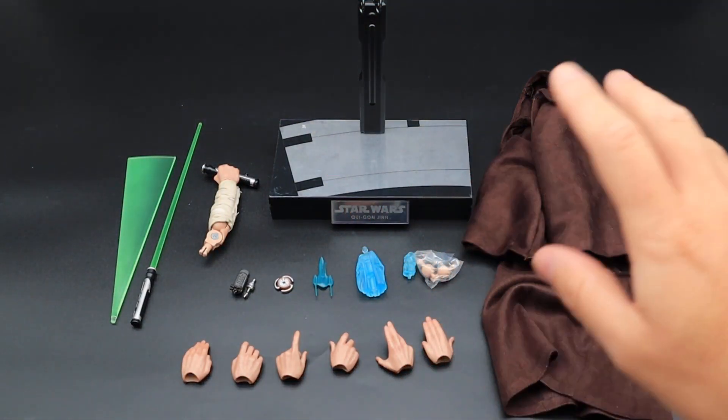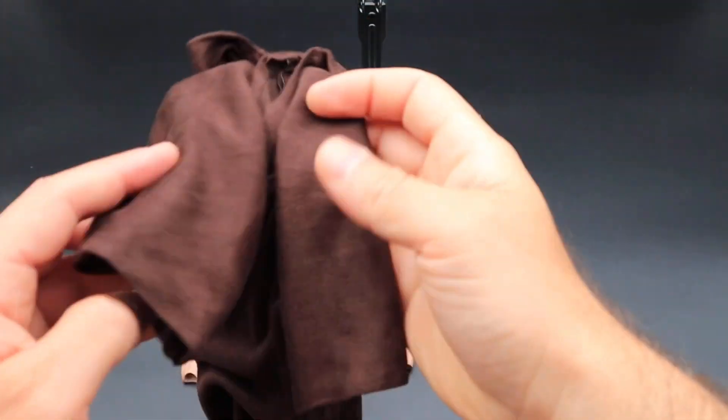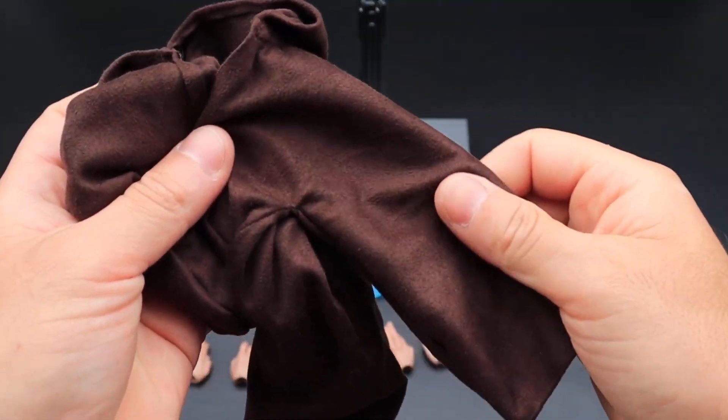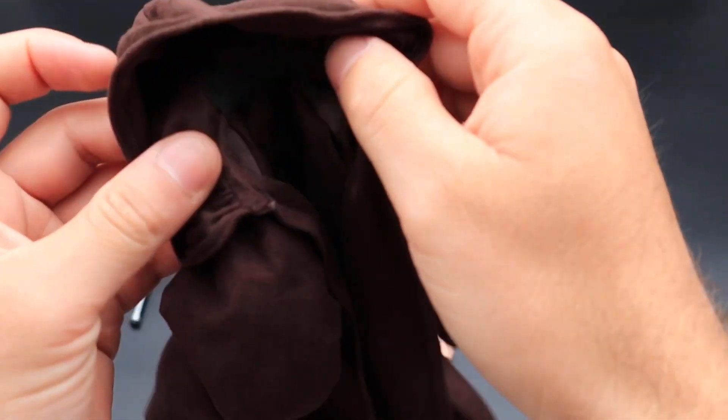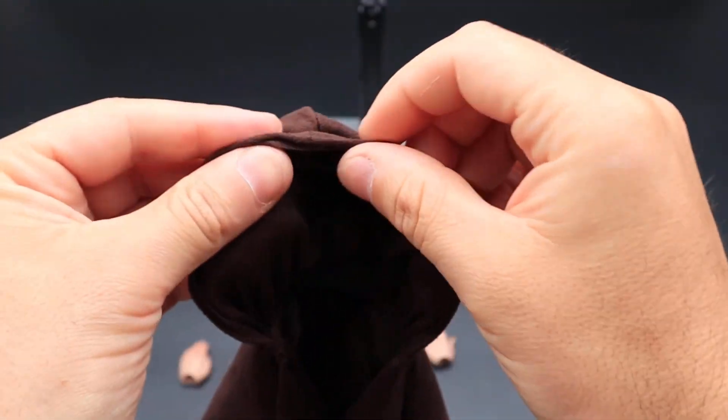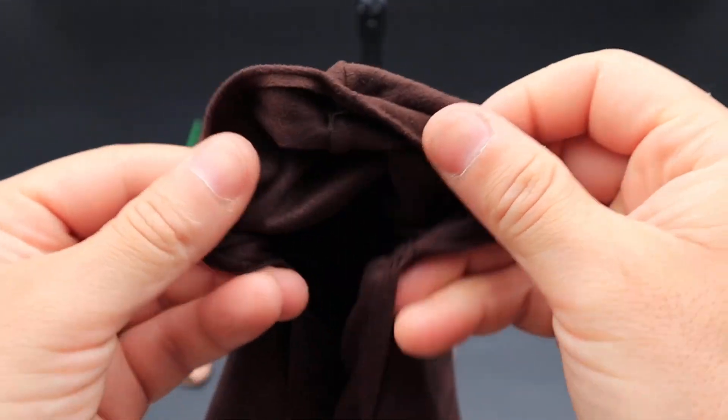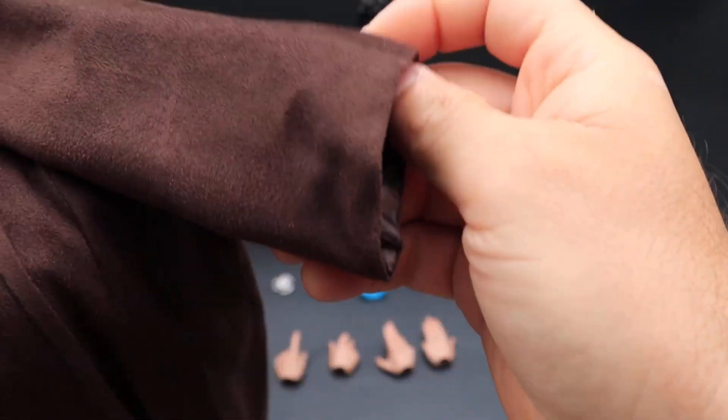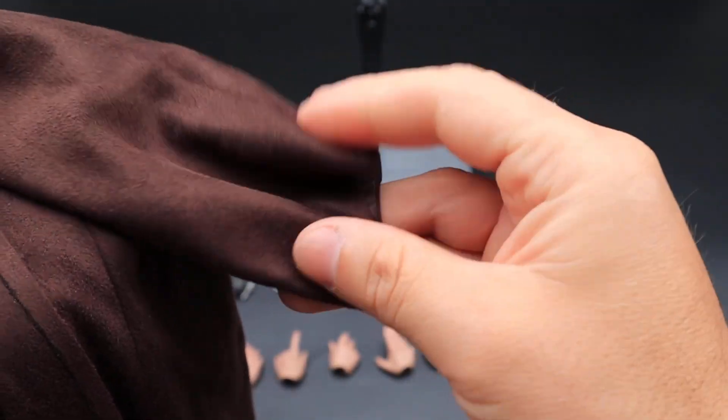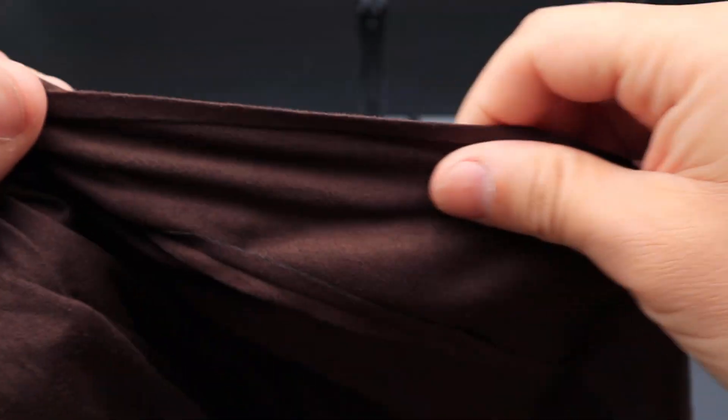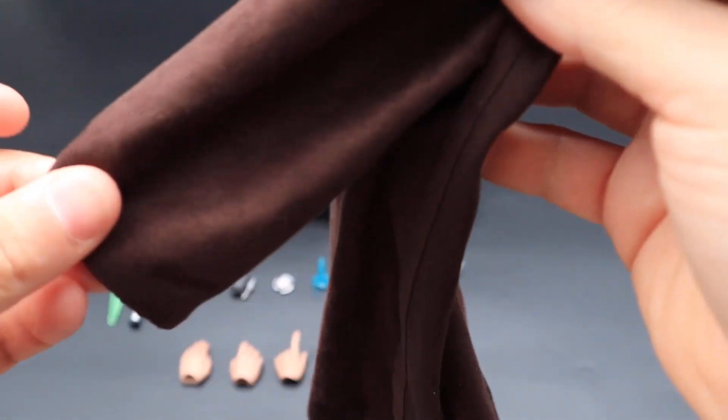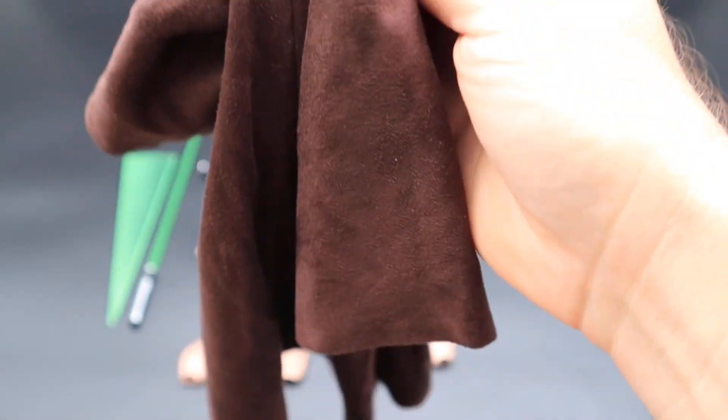Here are all the accessories that Qui-Gon comes with. I'll start off with the robe that you get - nice material. It does have wire running through the hood so you can manipulate that, but there is no wire in the sleeves and none along the side here, so you're unable to pose the sleeves or the rest of the robe. Otherwise pretty cool.